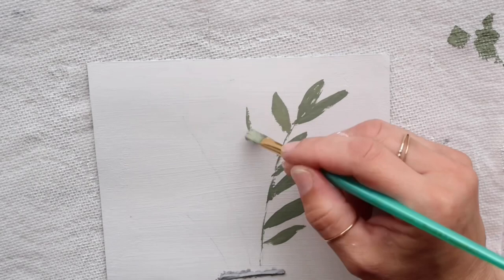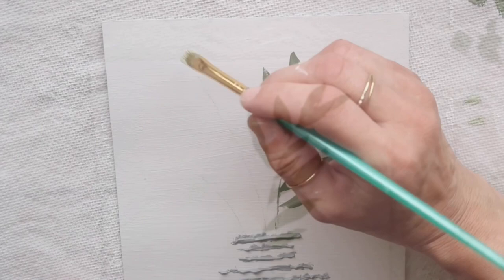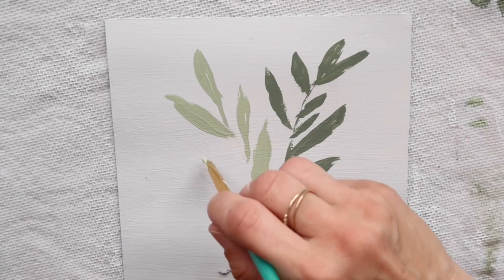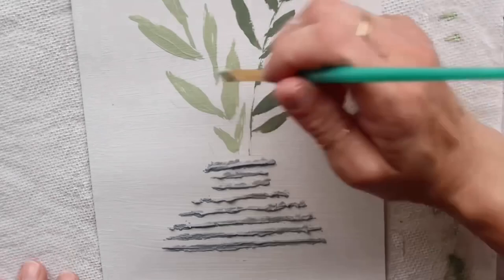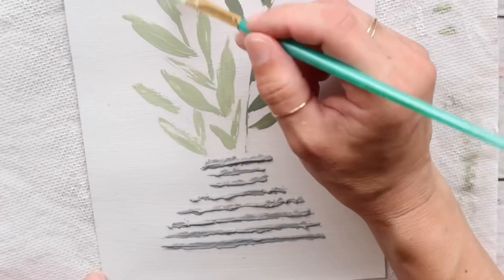But I really like painting and it is not so hard as it may look like. Now I'm taking this celery chalk paint by Waverly and I am creating another stem and painting those leaves as well. And I'm going to do the same thing with the third one.